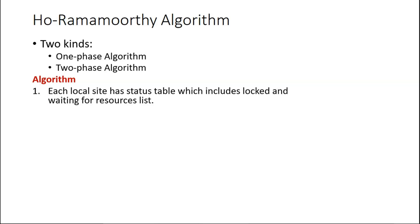The first step, whether two-phase or one-phase, is that each local site has a status table. So each local site has a status table that includes whatever resources the site already has and the processes which are happening on that local site. Every site has some local processes, and those processes and the local site have their own resources too.